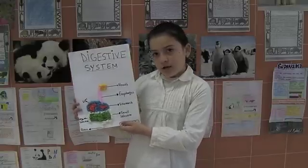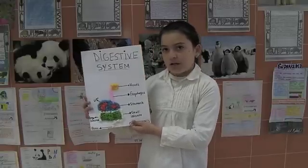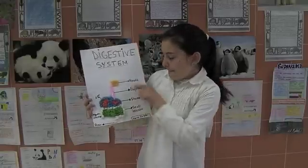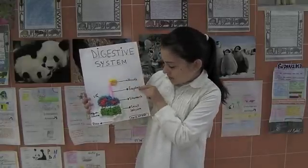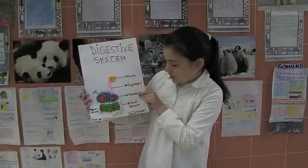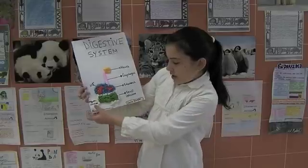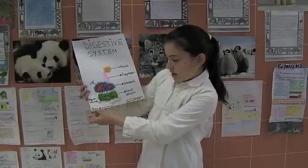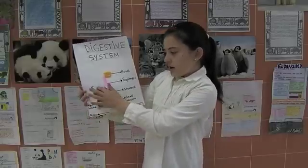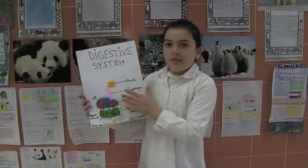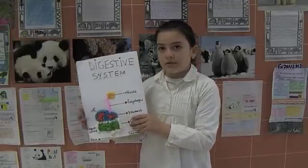Second, when the graph is finished, label the parts: mouth, esophagus, stomach, large intestine, small intestine, anus and nerve. Thanks for listening to me.